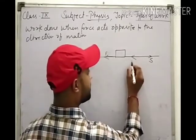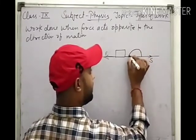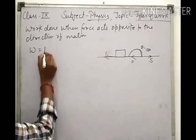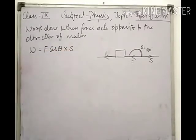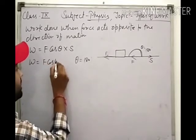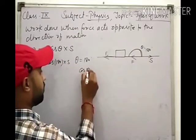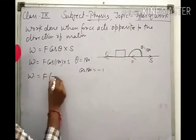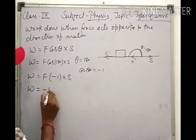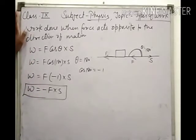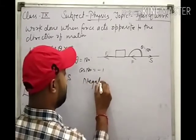When the force acts opposite to the direction of motion, the angle theta formed is 180 degrees. Using the formula W = F cosθ × s, we put theta = 180°. So W = F cos180° × s. The value of cos180° is always equal to −1. Therefore, W = F × (−1) × s, which gives W = −Fs. Here, the work done by the object is negative.